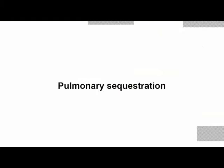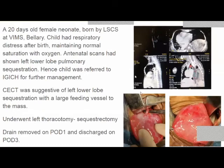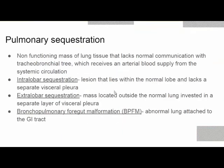A case of pulmonary sequestration operated at our hospital: a 20-day-old female neonate born by LSCS at VIMS Bellary, antenatally detected to have left-sided congenital pulmonary sequestration. After delivery, the child had respiratory distress but maintained normal oxygen saturation. CT was suggestive of left lower lobe sequestration with a large feeder vessel from the aorta. The child underwent left thoracotomy and sequestrectomy — thoracoscopy was not available due to COVID. Post-operative drain was removed on day one and the child was discharged on day three.